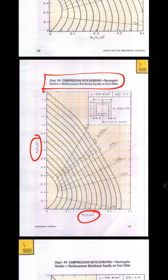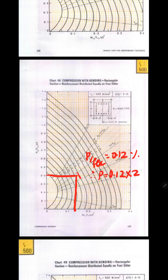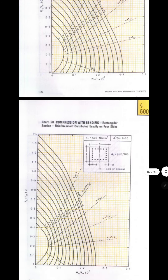These charts are for rectangular or square columns; some other charts are there for circular columns. For example, if intersection occurs at a value of 0.15 on one axis and 0.4 on the other, you take the higher line above the intersection — so p/fck = 0.12. Therefore p, the percentage of reinforcement, equals 0.12 multiplied by fck — using 20, 25, or whatever the concrete grade may be.